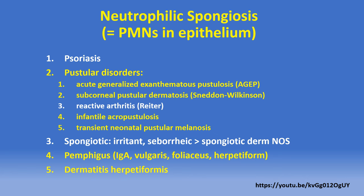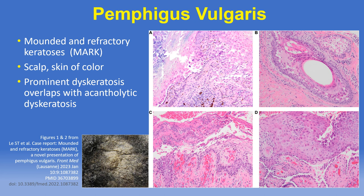Among the clinical pathologic variants of pemphigus vulgaris, colleagues here in the department of dermatology recently reported mounded and refractory keratoses (MARK) as a distinctive clinical variant with predilection for the scalp, affecting individuals with skin of color, and having unusually prominent dyskeratosis in some biopsies. In this case series of four patients, two cases were initially thought to be something else — one possibly warty dyskeratoma and another Darier disease at the H&E level — but subsequent clinical follow-up and direct immunofluorescence testing proved the diagnosis of pemphigus vulgaris in each case.